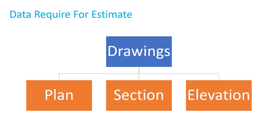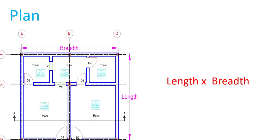Next, let's look at what data we require for an estimate. The first and very important requirement is drawings. In drawings, we need a plan, a section, and an elevation. From the plan, we can get the length and the breadth of an object. So if you need length and breadth during estimation, you will go directly to the plan.